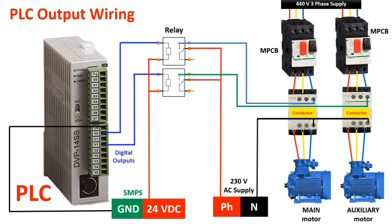Now let us understand the output circuit required for this project. First of all, in the common terminal we have to connect the ground terminal of the SMPS. Our actual output is the motor, but it is turned on by a DOL starter. This is the MPCB which works as both MCB and OLR, and this is our contactor. Since we cannot directly energize the contactor through PLC outputs, we have used a relay. In the relay input circuit, one terminal of each relay will connect to the 24V supply, and the other terminal of relay 1 will connect to the Y0 position.